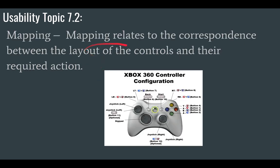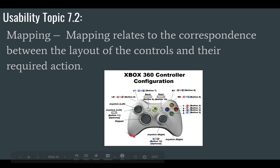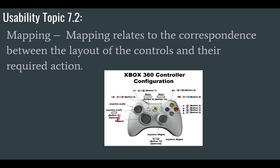Mapping relates to the correspondence between the layout of controls and their required action. A great example is an Xbox controller — Xbox controllers are laid out in a way that fits your hands. Whoever first came up with this idea had a brilliant way to design a game controller. It's very intuitive; it just fits in your hand perfectly. The layout of all the controls matches their required actions.